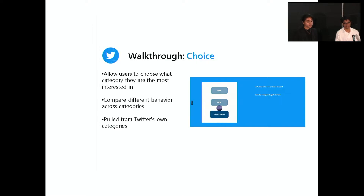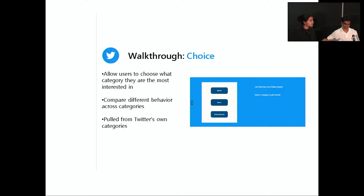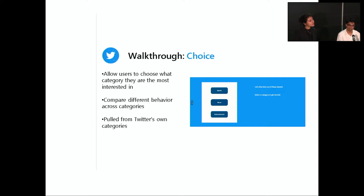Another key aspect of our visualization is the concept of choice. Everybody likes agency when they use social media — we're all used to a world with little friction and everything personalized. So we took the three main categories — sports, entertainment, and news — and allowed users to toggle or choose a category that interests them. This isn't just for fun: it's vital for comparing data, since tweets from different categories can have very different behaviors. Users can compare tweets across time, levels of demotion, and category, which we think is pretty interesting.